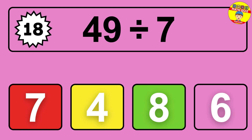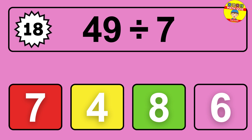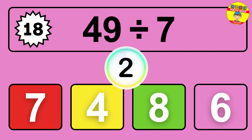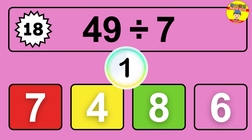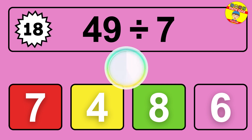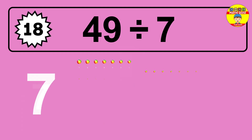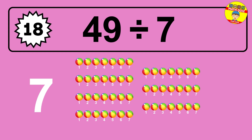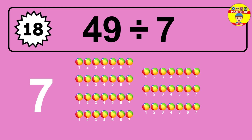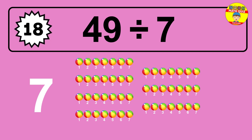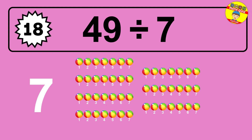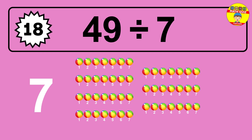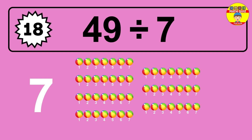49 divided by 7 is time to think. Let's go to the solution. Divide the number 49 by 7. Each group contains 7 units, so dividing 49 by 7 results in 7 equal groups. Thus the result is 49 divided by 7 equals 7.